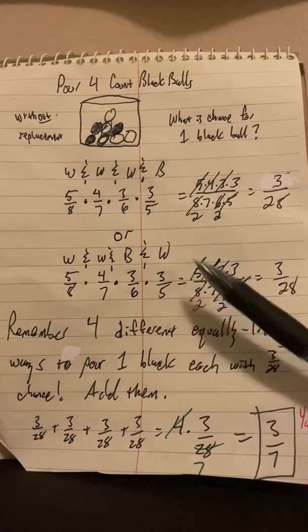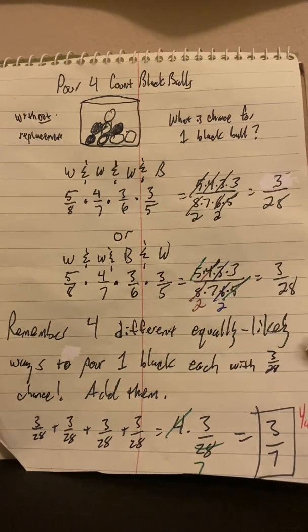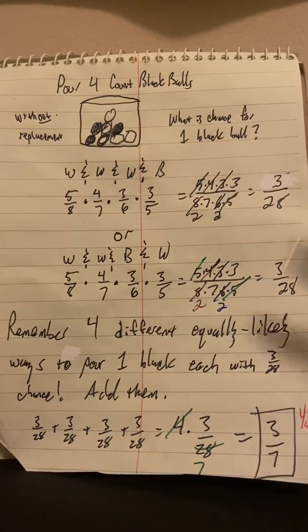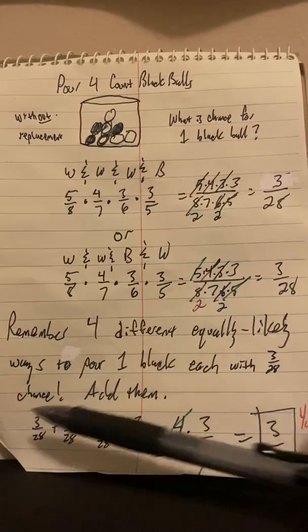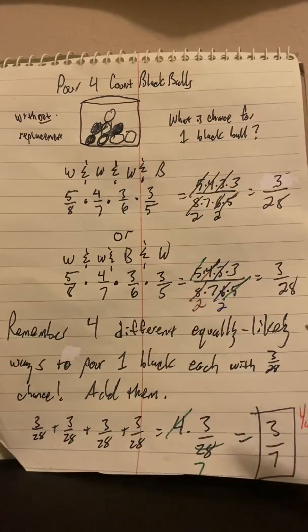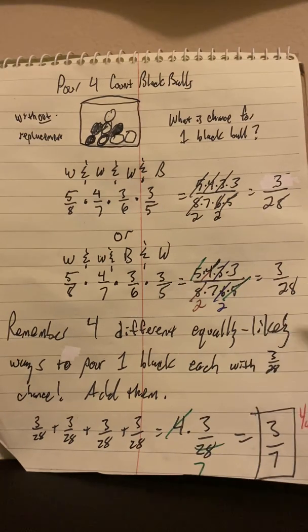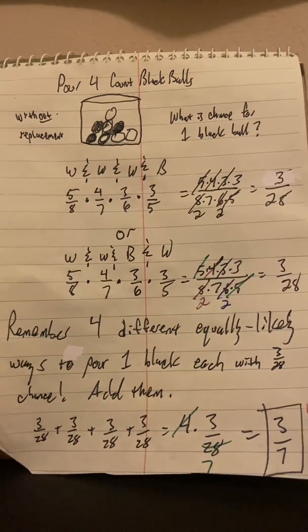Now remember there's four different equally likely ways to pour out this one black ball. And each of them is going to have a three and twenty-eighth chance. So we're going to add all those up because it's this or that or the next one or the next one. So or means add, we add these up or that's the same since they're all the same is multiplying by four. Four goes into 28 seven times. And so the chance for one black ball is three sevenths. Yay, we solved this problem.